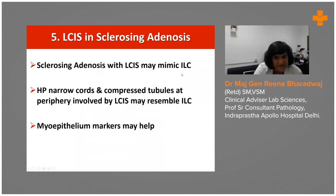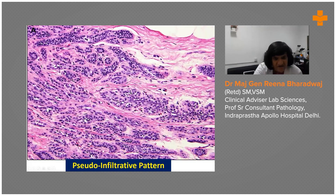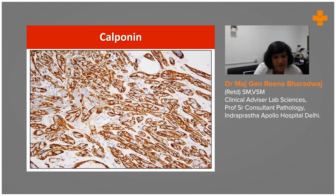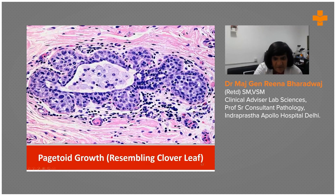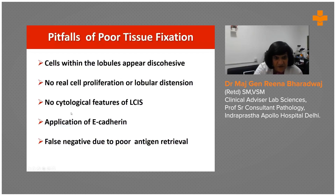LCIS within sclerosing adenosis may mimic an ILC. You will have cords and compressed tubules at the periphery by LCIS, and it may completely look like an ILC. It is pseudo-infiltrative in appearance. But when you use calponin, it shows myoepithelial markers, confirming this is not an ILC but just a sclerosing adenosis. There is also pagetoid spread: LCIS can go beneath the ductal epithelium, giving a virtual cloverleaf appearance resembling pagetoid growth. These pitfalls occur especially when we don't have complete sections of the entire lesion.